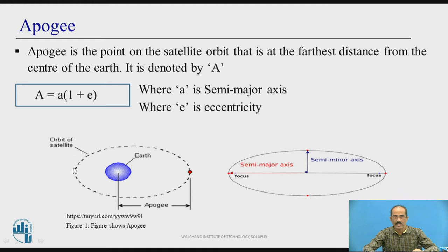You can see this diagram. There is the earth, and the satellite is revolving around it in an elliptical path. The point on the orbit which is the furthest or longest distance from the earth is called apogee. When the satellite reaches that place, this is the furthest distance from the satellite to the earth center — that is represented as apogee.